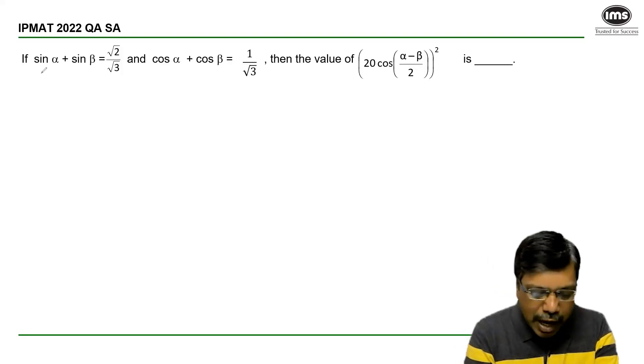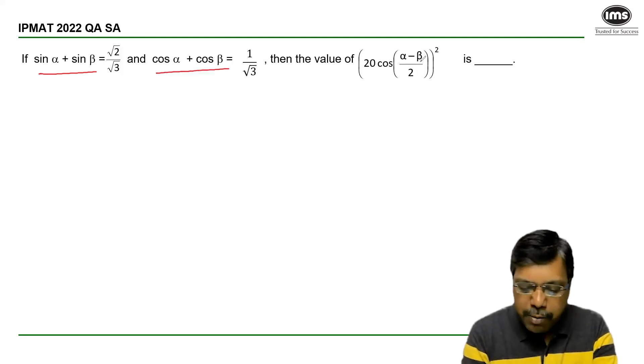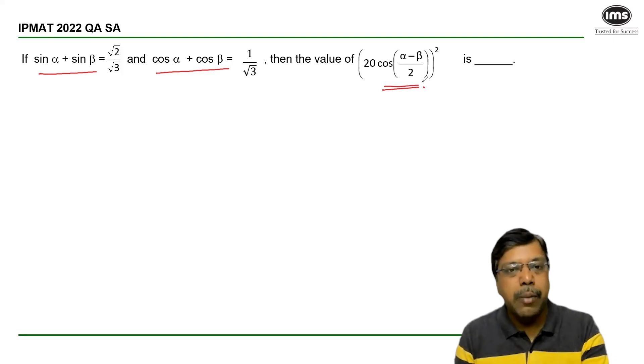The information provided in the question is sin alpha plus beta and cos alpha plus beta, and what we are to find out is cos alpha minus beta by 2.